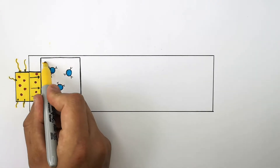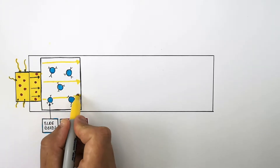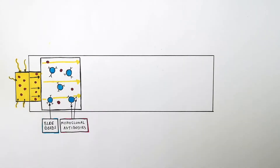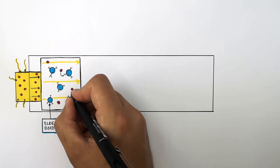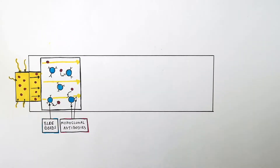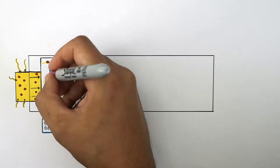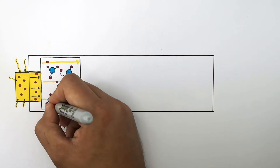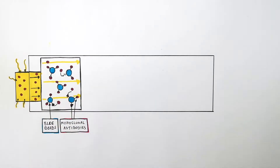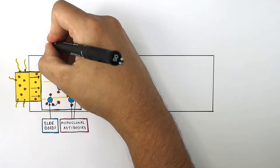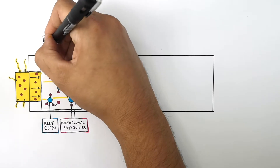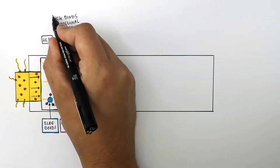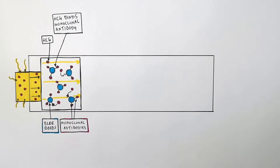The urine with the HCG hormone in it moves through this part of the pregnancy test. Because these monoclonal antibodies are specific to HCG, the HCG hormone binds onto the antibodies that are on the blue beads. These purple dots represent the HCG hormone binding to the monoclonal antibodies attached to the blue beads of dye.